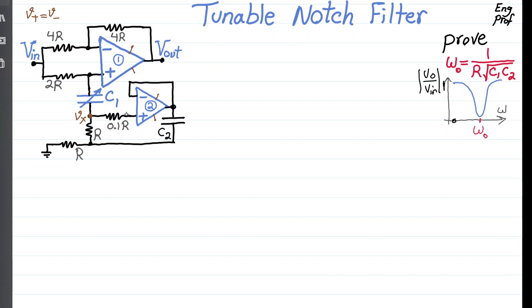Since no current can flow through the op-amp input, current is 0, so V-positive equals Vx. Because of the virtual short, V-negative is also Vx, which means the voltage on the top terminal of C2 is Vx. You can see that C2 has the same voltage on both terminals as resistor R — so effectively, R and C2 are in parallel.